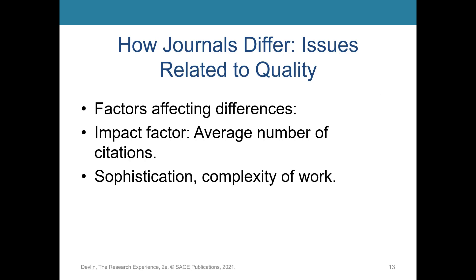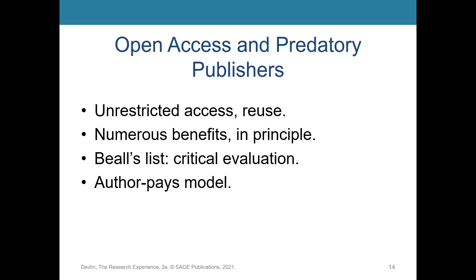You always want to look at a journal's impact factor — that's the average number of citations the journal has received. The bigger the impact factor, generally the more widely read the journal is. Factors affecting journal quality include how many issues are published each year and the acceptance versus rejection rate. Open access journals offer unrestricted access to published articles — there are about 13,000 journals listed in the Directory of Open Access Journals.